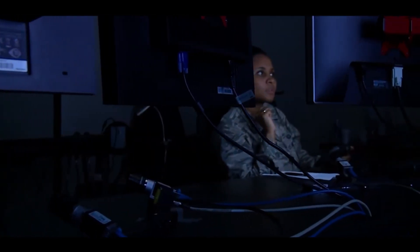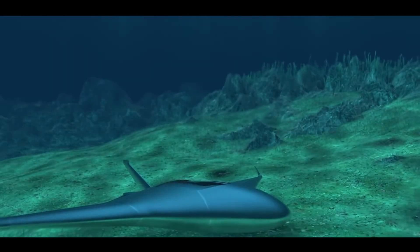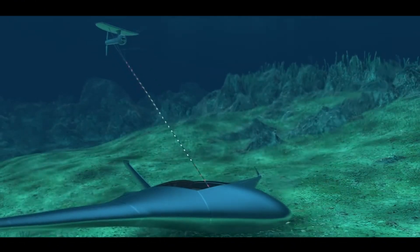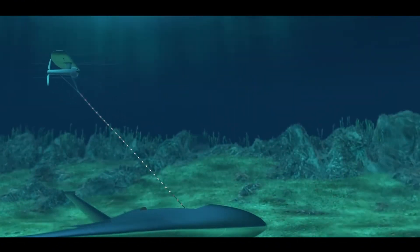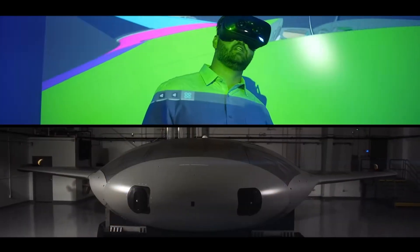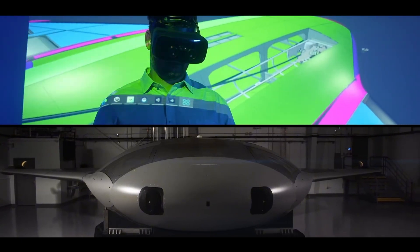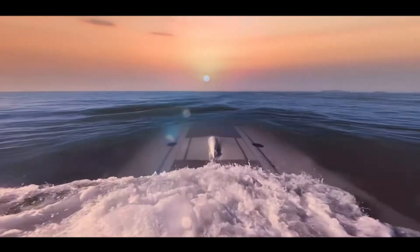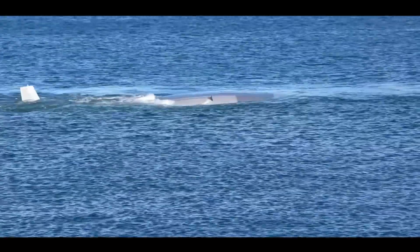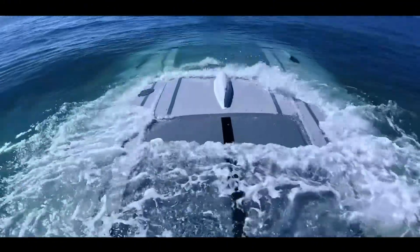Another critical obstacle is maintaining communication with a submerged drone. Since radio signals do not travel effectively underwater, alternative solutions have been explored. The manta ray employs a combination of acoustic waves, satellite relays, and surface buoys to maintain connectivity with its operators. These systems ensure that the drone remains controllable and can transmit valuable data back to its command center, even when operating at significant depths.